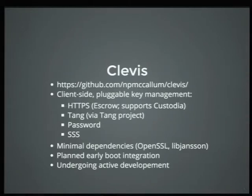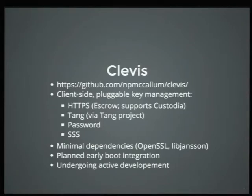This is actually implemented by a project called Clevis. This is client-side pluggable key management. A Clevis pin is a plug-in for this framework. It provides HTTPS, which is the standard escrow case that lots of people are already using — Clevis can go into that environment and work out of the box. We also have support for Custodio, which is an awesome key transfer framework and API that CMO is working on.